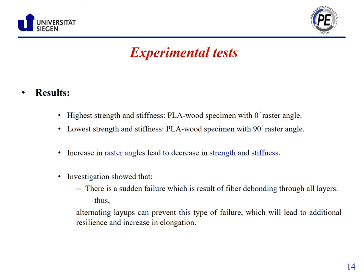Experimental findings demonstrated a relatively large reduction in fracture load in zero-degree specimens. This can be related to the fact that the rasters in zero-degree specimens are along the loading direction and these specimens show the highest strength. Thus, a defect can significantly change the mechanical performance of these 3D printed parts. Experiments confirmed that an increase in raster angle leads to a decrease in strength and stiffness. The conducted tests showed a sudden failure which is the result of fiber debonding through all layers; therefore, alternating layup can prevent this type of failure.